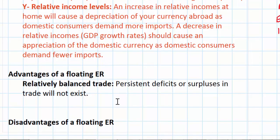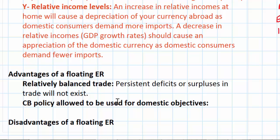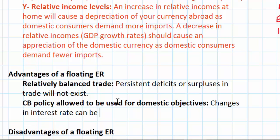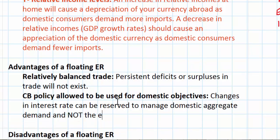Another advantage of a floating exchange rate system is that central bank policy is free to be used for domestic macroeconomic policy objectives. In order to manage an exchange rate, a central bank must use interest rates not to control domestic aggregate demand, but to control the value of the currency in foreign exchange markets. Under a floating exchange rate system, changes in interest rates can be reserved to manage domestic aggregate demand rather than the exchange rate. In our next lesson we'll talk about how under a managed exchange rate system, central banks must constantly adjust interest rates to manage the flow of foreign exchange in and out of the country.